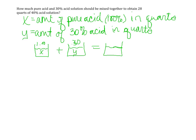And what I'm trying to obtain is 28 quarts of a 40% solution. So I'm trying to get 40% and I want 28 quarts. Therefore, the amount of pure acid added to the amount of 30% acid must equal 28 quarts.